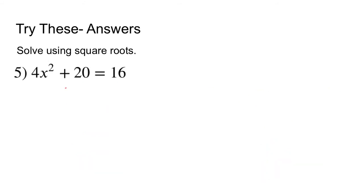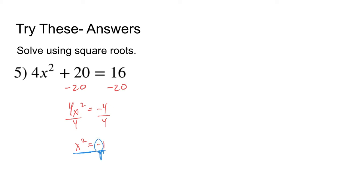Finally, number 5: subtract 20 from both sides, then divide both sides by 4 to get x squared equals negative 1. I'm going to stop right there, because I know that I can never square a number and get a negative value. There's no number that could possibly be squared to give a negative number. So there is no real solution to number 5.